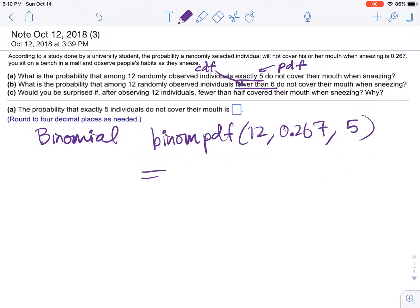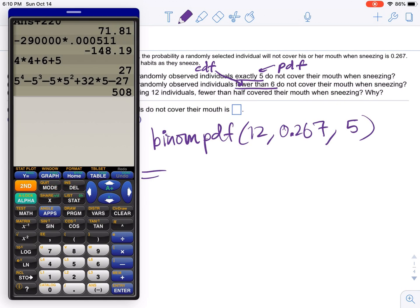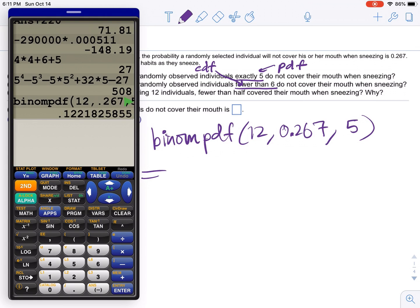And that's it. So on the calculator, we're going to go to distribution. We're going to go to distribution. It's to the left of clear. You actually have to do second VARs, right? So right there. Binomial PDF, 12 comma. See how it's telling me to put the number of trials, P, then X. So 0.267, comma, 5. And that's the answer, 0.12222.